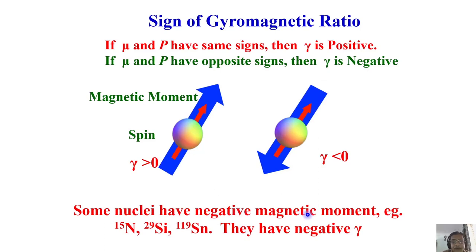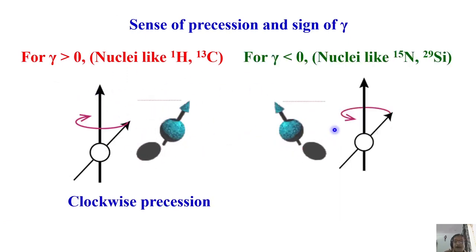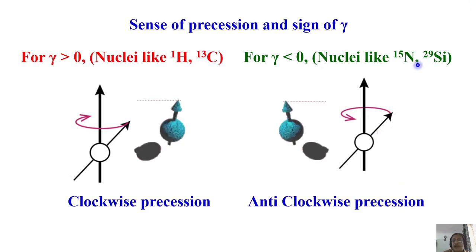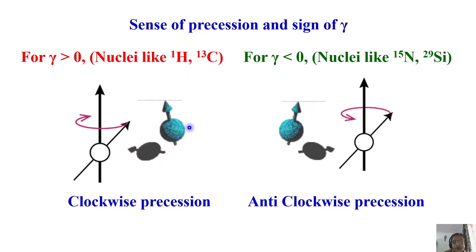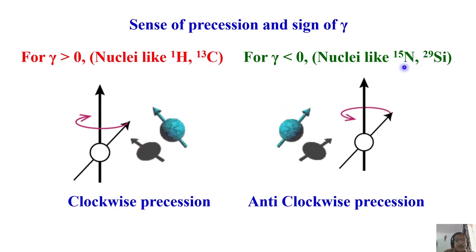Depending upon the sign of gamma, the sense of Larmor precession of the spins in the magnetic field is different. For gamma greater than zero, the spins rotate clockwise, whereas for gamma less than zero, they rotate anti-clockwise — the opposite direction. For example, nitrogen-15 spins will always rotate in the opposite direction compared to proton and carbon, which have positive gamma. This concept will be very useful in designing double quantum or triple quantum forbidden transitions — multiple quantum transitions involving heteronuclei like proton and nitrogen, or carbon and nitrogen. The sense of precession decides the quantum.